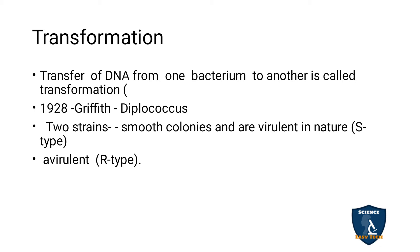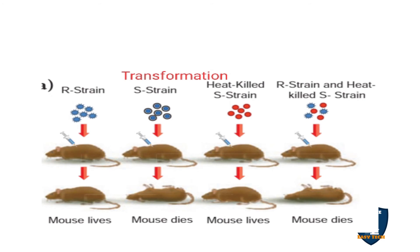Griffith took two strains: smooth colonies, which are virulent and will kill the host; and rough colonies, which are avirulent — R type — meaning they won't kill the host. In the first step, R type cells are injected into a mouse and the mouse lives.